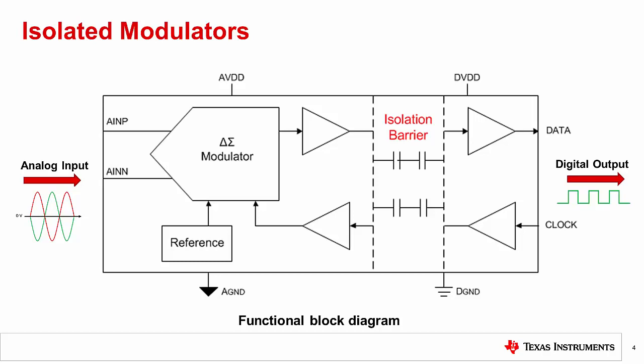The delta-sigma modulator uses a voltage reference and a clock to convert the analog input signal to a continuous 1-bit output stream that is then transferred across the isolation barrier. The isolated data output of the modulator produces a stream of digital 1s and 0s at the same frequency as the clock source.